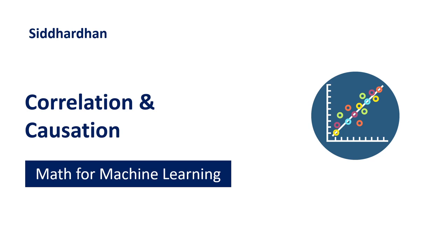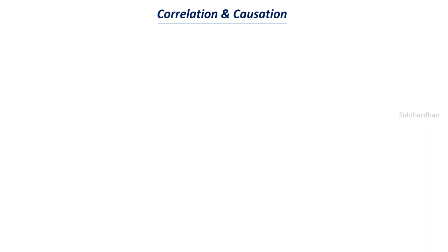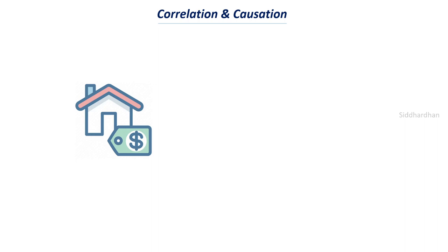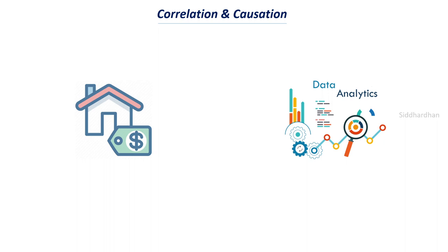The next important topic is correlation and causation. Correlation means two things are related to each other. In machine learning and data analysis, consider a dataset with house prices. We want to find which factors affect the price of a house — which factors increase or reduce it. We are trying to find the relationship between features in the dataset, such as location and number of rooms, and correlation helps us do that.